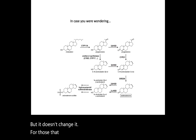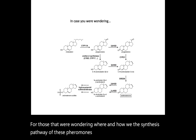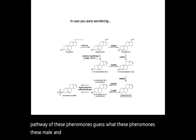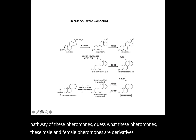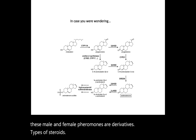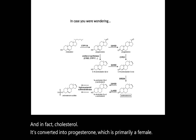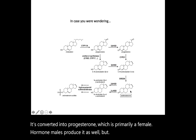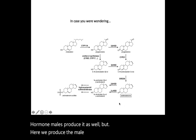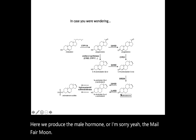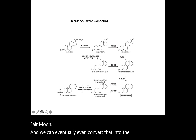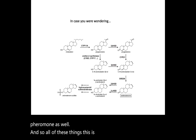For those wondering about the synthesis pathway of these pheromones — these male and female pheromones are derivatives; they are types of steroids. In fact, cholesterol is converted into progesterone, which is primarily a female hormone, though males produce it as well. From there we produce the male pheromone, androstadienone, and we can eventually convert that into the female pheromone as well. So all of these things — the pheromones, the hormones — are all related to our steroids.